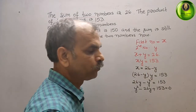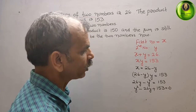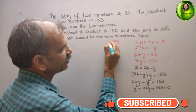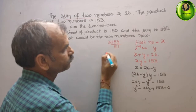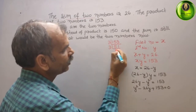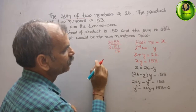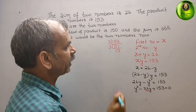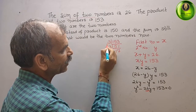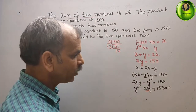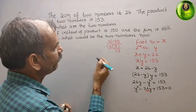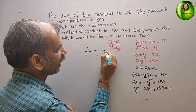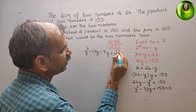Now we take out the factors of 153. The digits are 1, 5, and 3. Dividing by 3 gives 51, and dividing again by 3 gives 17. So the factors are 3, 3, and 17. We need two numbers that multiply to 153 and add to 26. We can see 17 and 9 gives 26. Using middle term splitting, we write Y squared minus 17Y minus 9Y plus 153 equals 0.